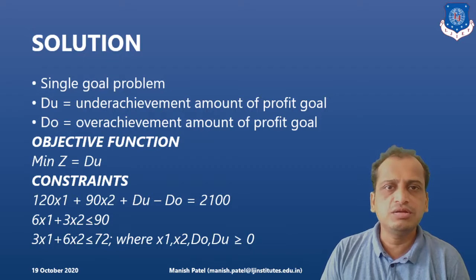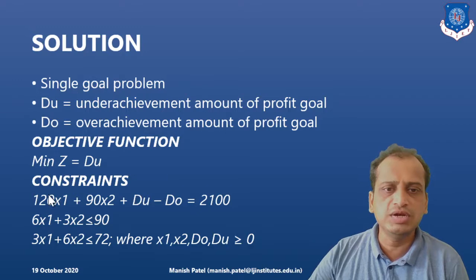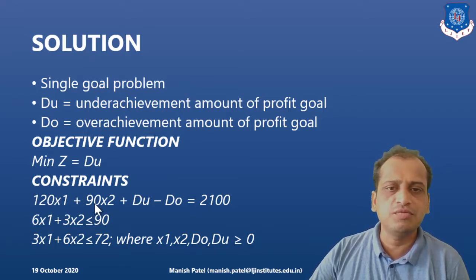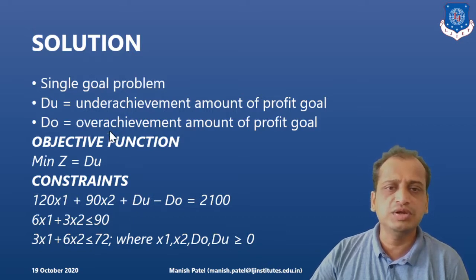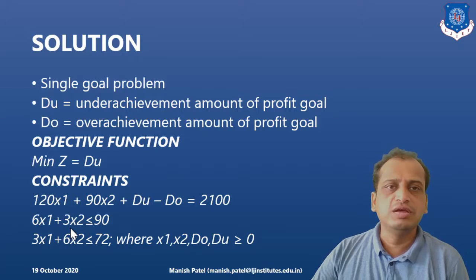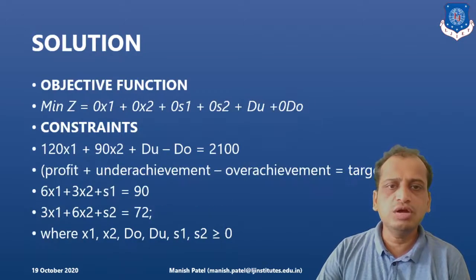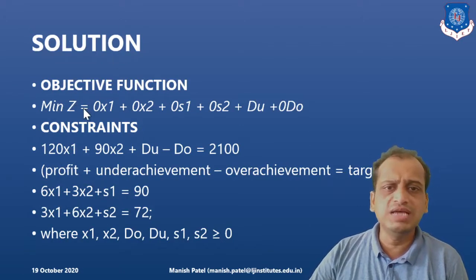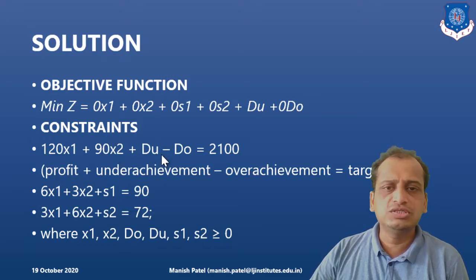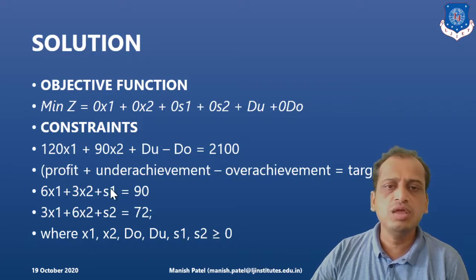Three constraints are present: the profit constraint — where profit plus underachievement minus overachievement equals the target of ₹2100 — plus the assembly and finishing department constraints. Converting to standard form: minimize Z = 0·x1 + 0·x2 + 0·s1 + 0·s2 + du + 0·do. We also introduce two slack variables to convert inequalities into equalities, where all variables are ≥ 0.